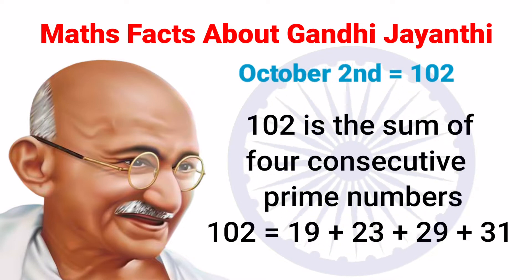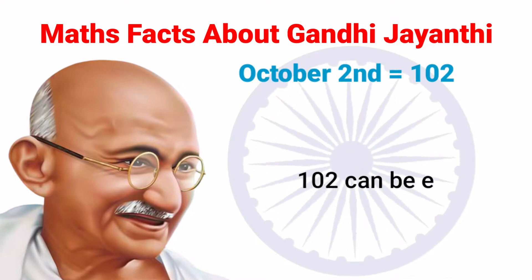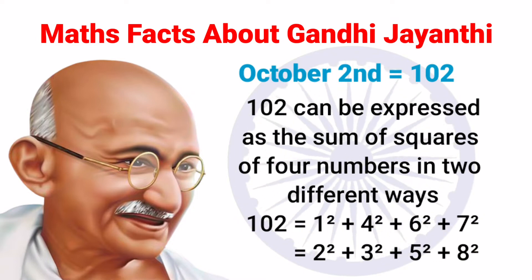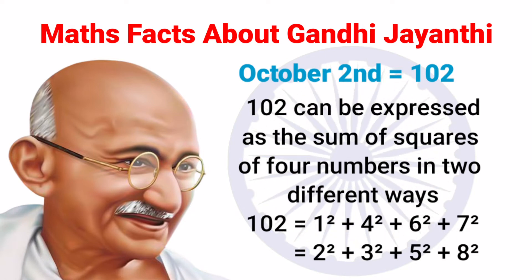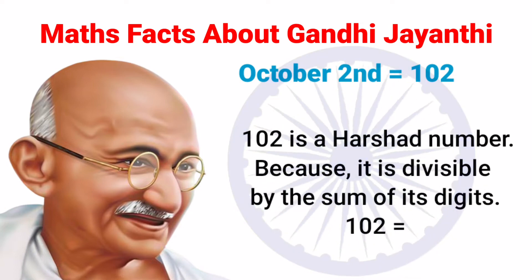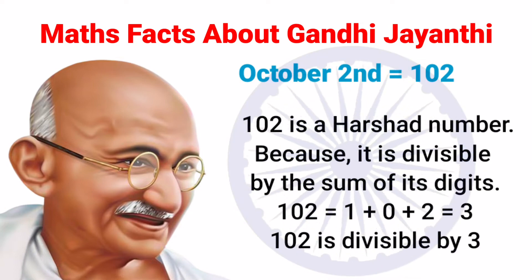Next, 102 is the sum of four consecutive prime numbers: they are 19, 23, 29, and 31. Next, 102 can be expressed as the sum of squares of four numbers in two different ways. The first way is 1² + 4² + 6² + 7².